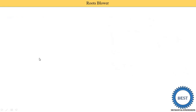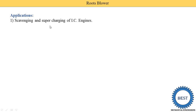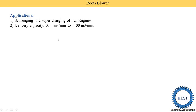The first application is scavenging and supercharging of IC engines. During supercharging, more power is required, so the roots blower is installed on the suction side of air. Scavenging uses the roots blower to remove exhaust gases from an IC engine by supplying fresh air. The delivery capacity ranges from 0.14 m³/min to 1400 m³/min, with a pressure ratio of 2:1 for a single stage and 3:1 for a two-stage arrangement.